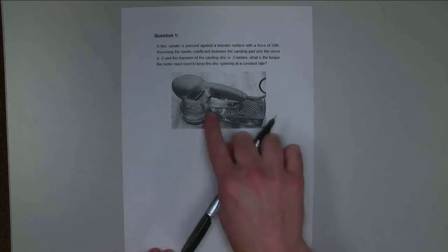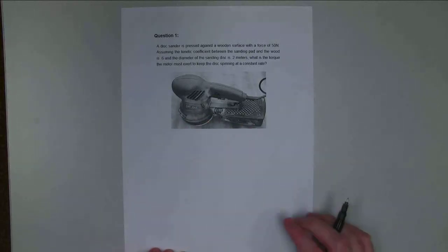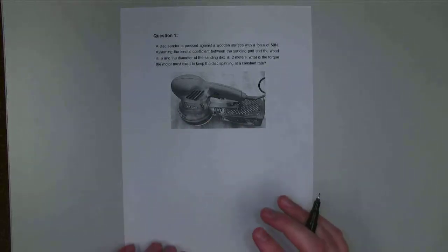And we're assuming that this disc on the bottom of the sander is going to be spinning around. There's going to be some friction force. It's going to cause a moment. And so we're going to have the friction force causing a moment opposing the motion.